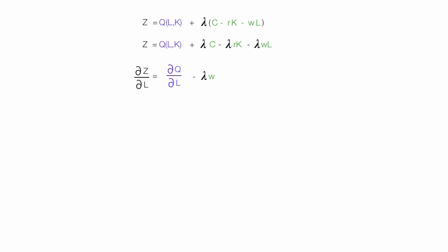Now I take the partial derivative of Z with respect to K, which equals the partial derivative of Q with respect to K — in other words, how does quantity change when capital changes? I take the derivative of that part of the equation. Those terms are constants because they don't contain a value of K, so this leaves me with minus lambda times R.